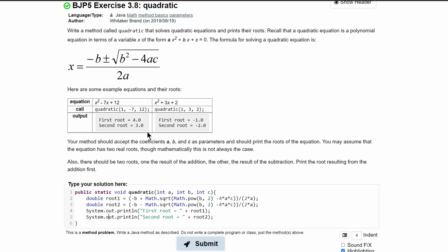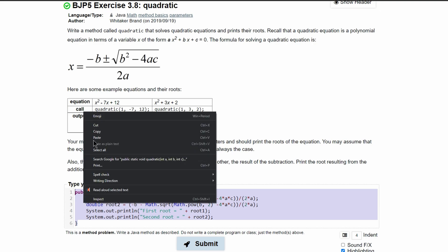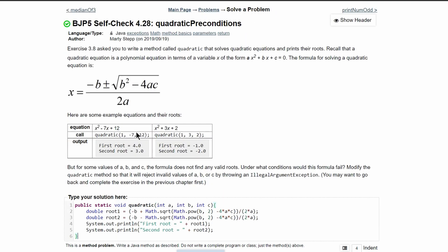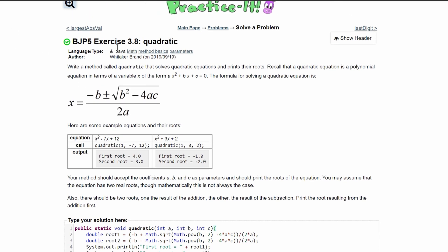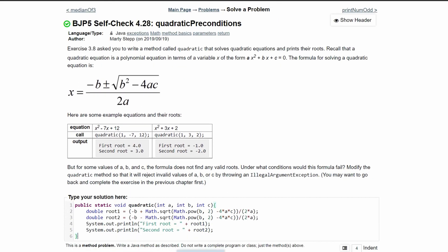However, it doesn't account for some possible user input errors. So we can copy this code because it's going to be basically the same thing, the same method, but this exercise is accounting for user error where exercise 3.8 did not.